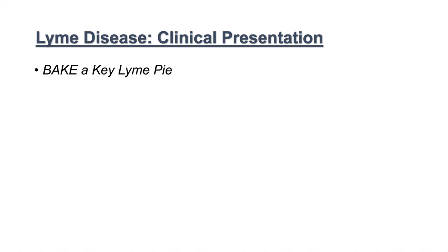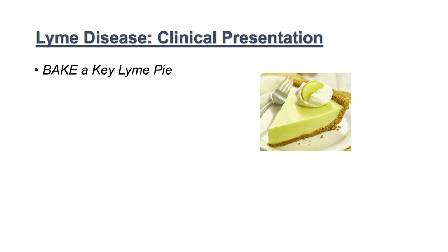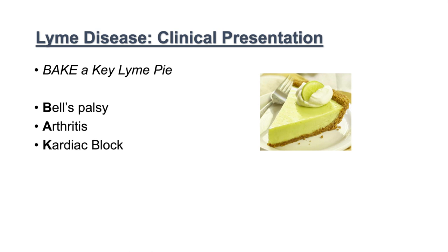An easy way to remember the clinical presentation of Lyme disease is the mnemonic 'bake a key lime pie.' The clinical presentation is captured in the word BAKE: B stands for Bell's palsy, A stands for arthritis, K stands for cardiac block — which can be first, second, or third degree AV block — and E stands for erythema migrans. So: Bell's palsy, arthritis, cardiac block, erythema migrans.